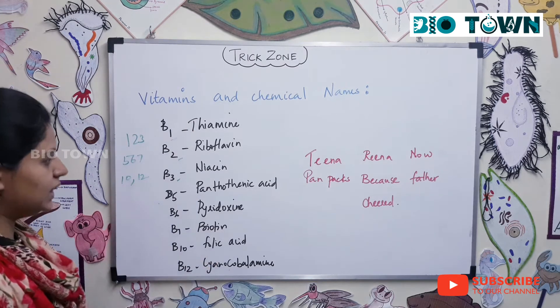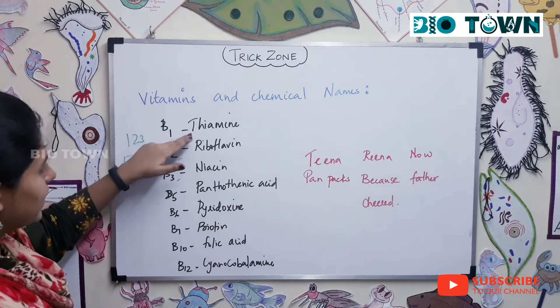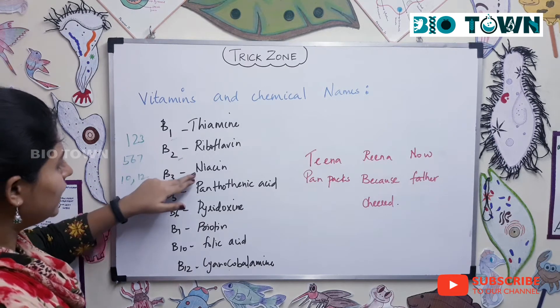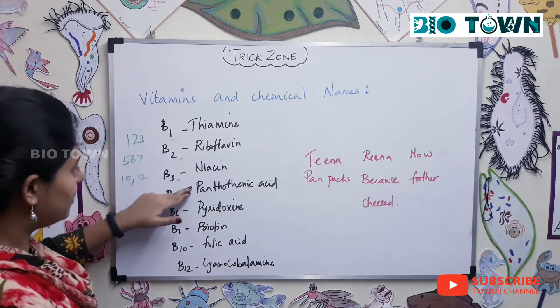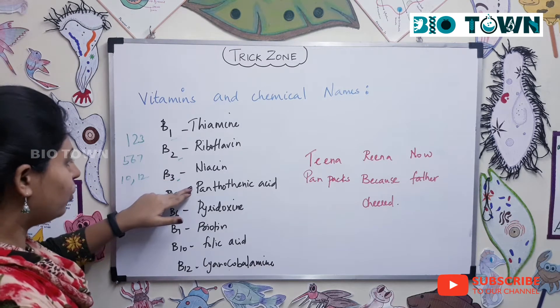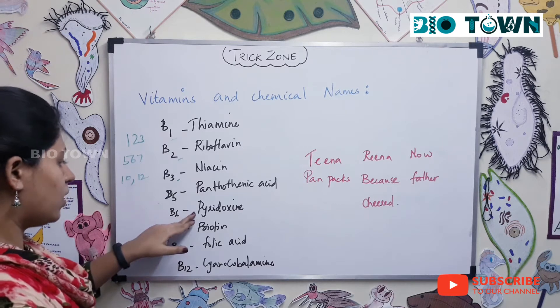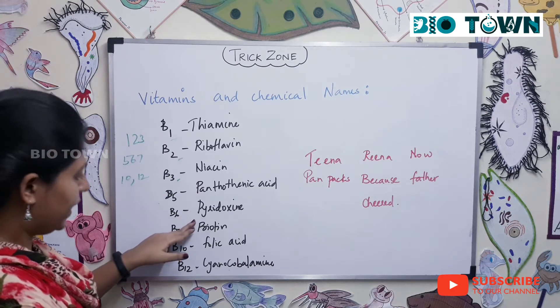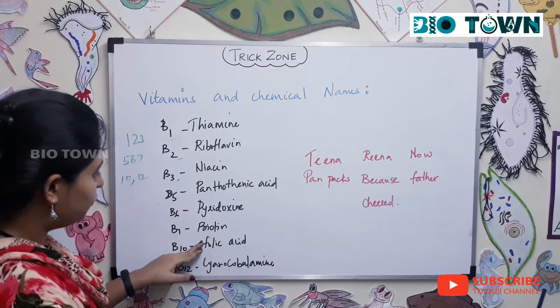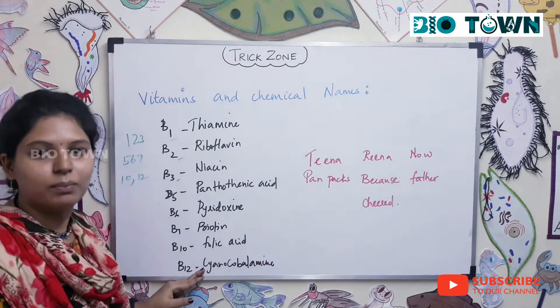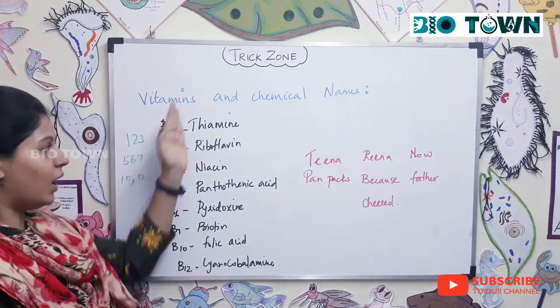Now, the chemical names to remember are: thiamine, riboflavin, niacin, pantothenic acid, pyridoxine, biotin, folic acid, and cyanocobalamin. Now, how to remember this order?